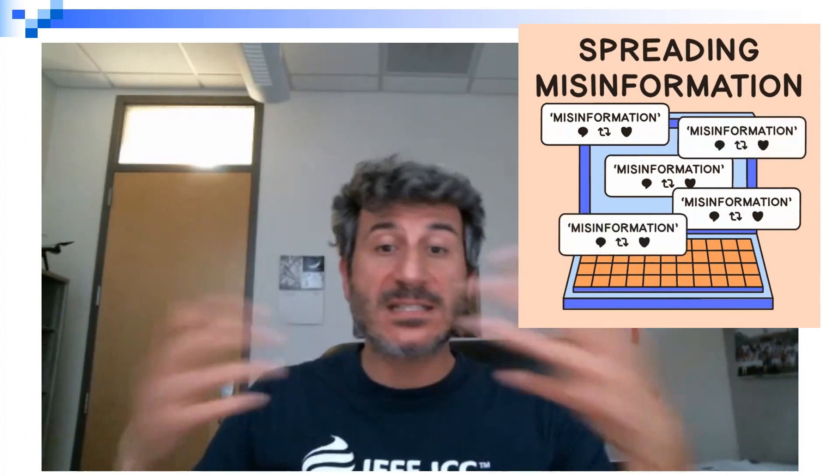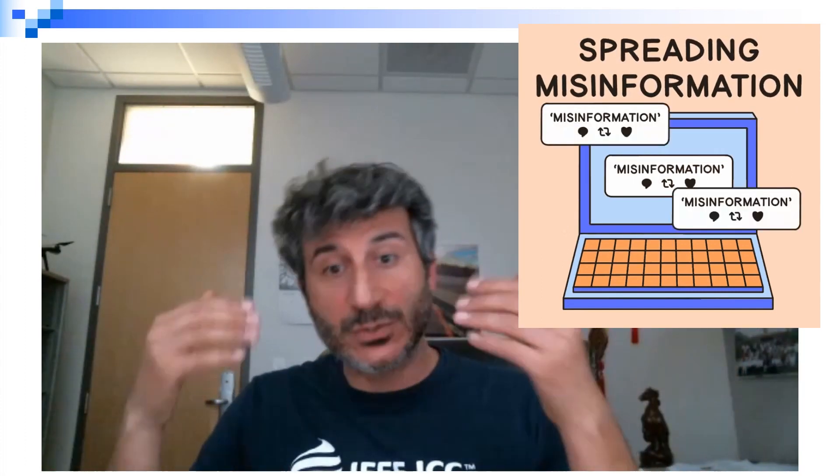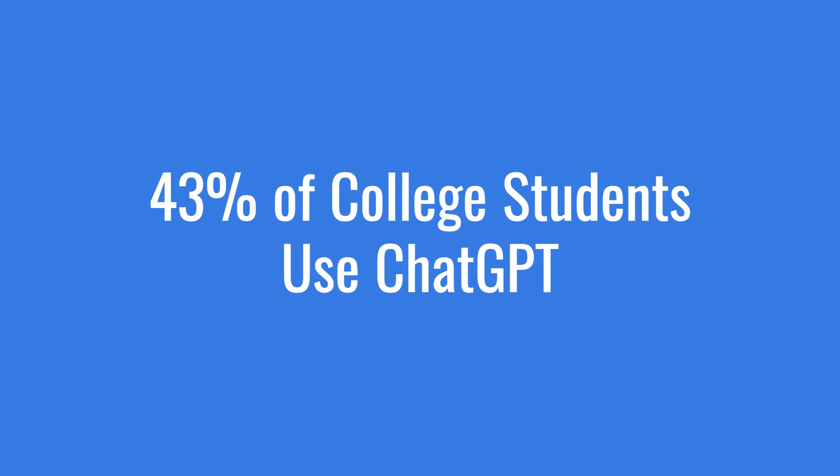At the societal level, the risks arise from these tools being used to generate disinformation, propaganda, and misleading content in general. This could impact the informational ecosystem, the educational ecosystem, and potentially the functionality of our democratic society. For example, studies now show that about 43% of college students are using ChatGPT to answer their homework and assigned questions.